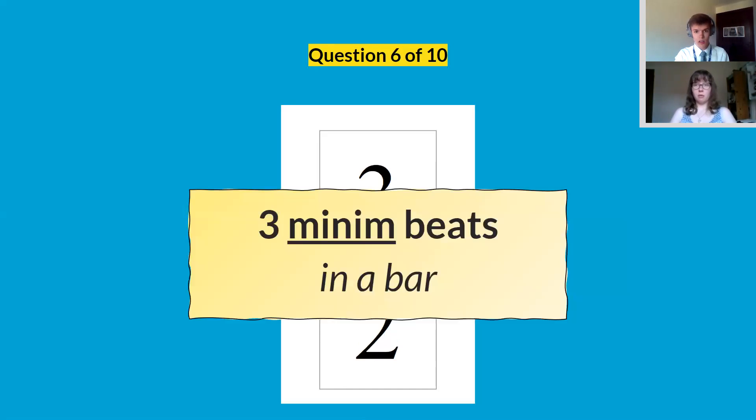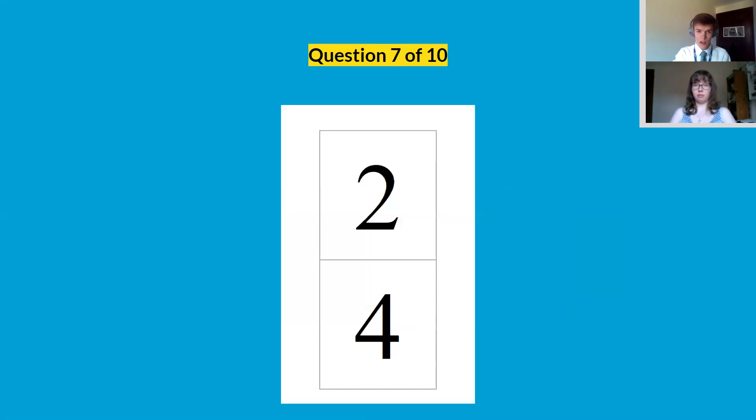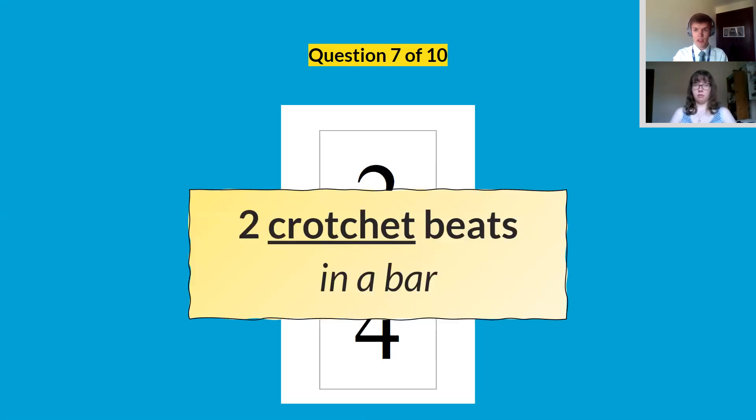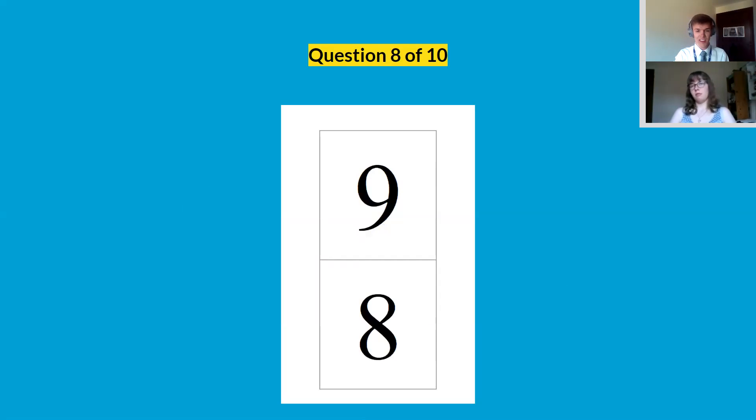Question six, three, two. I've got three minims in a bar. Question seven, two, four. Two crotchet beats in a bar. And nine quavers in a bar.